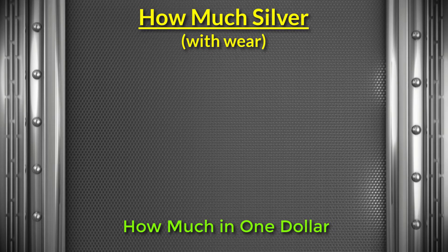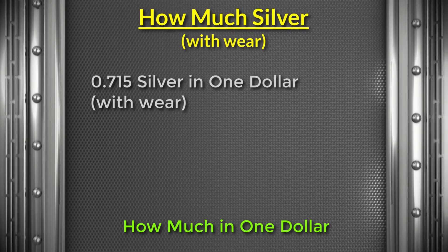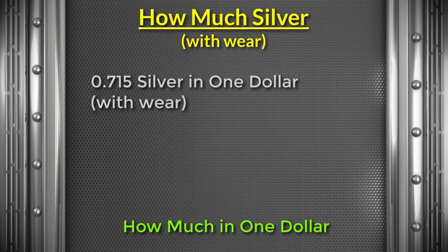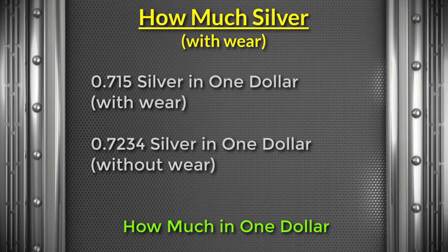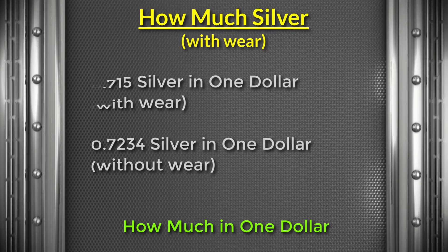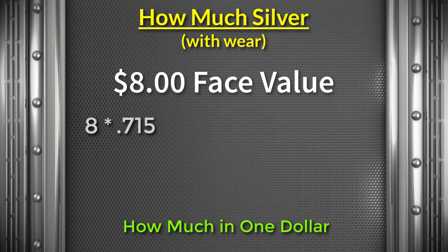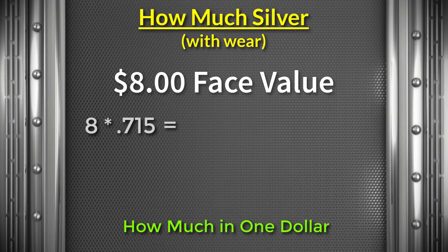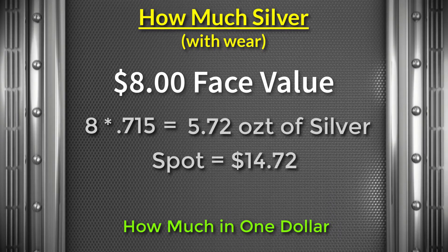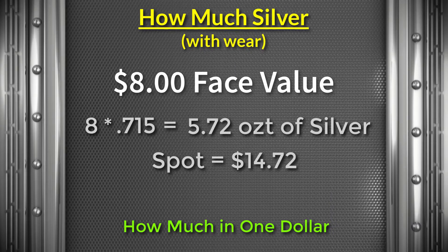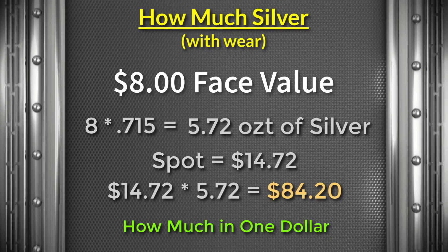Another formula you can use is the calculation of how much silver is in a dollar of face value — that number is 0.715, which has some wear of the coin built into it. Without wear it's about 0.7234, but almost all junk silver is going to have wear. So for the $8 example, you multiply $8 by 0.715 and you get 5.72 ounces. If spot is $14.72 and you're paying spot price, that would be $84.20.